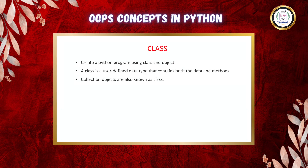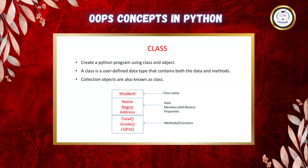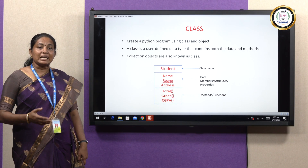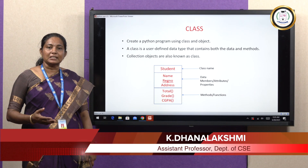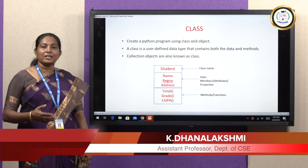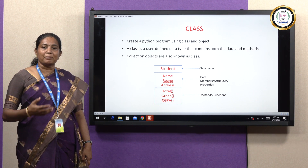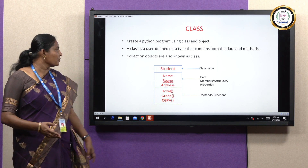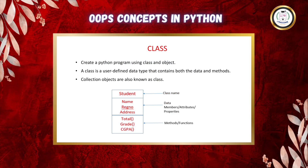What is class? A class is a user-defined data type which is made up of a set of data members and methods. Data members are real-time entities like name, age, register number, marks, length, breadth, and all valid variables. A class contains both data and methods. A collection of objects is also known as a class.